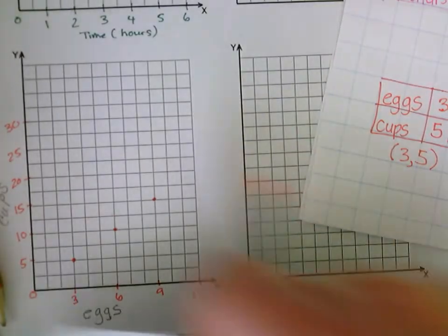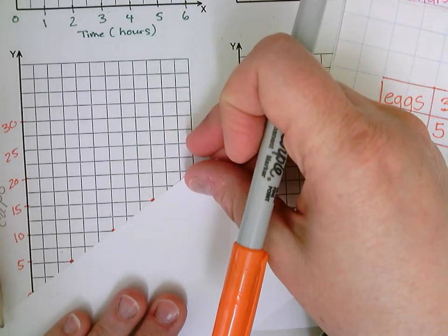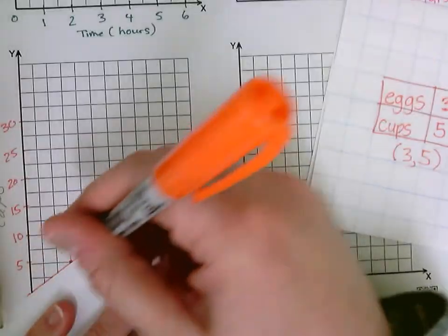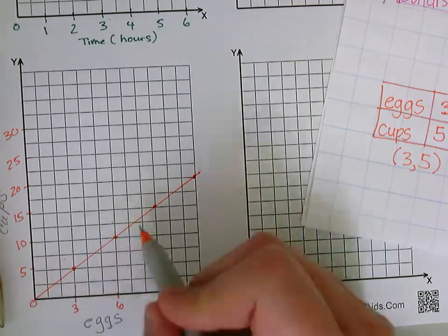Even if I drew my line, you can take a ruler starting at zero and connect all your dots. You can see that twelve would land right at twenty. It follows that same ratio, it follows the same relationship.